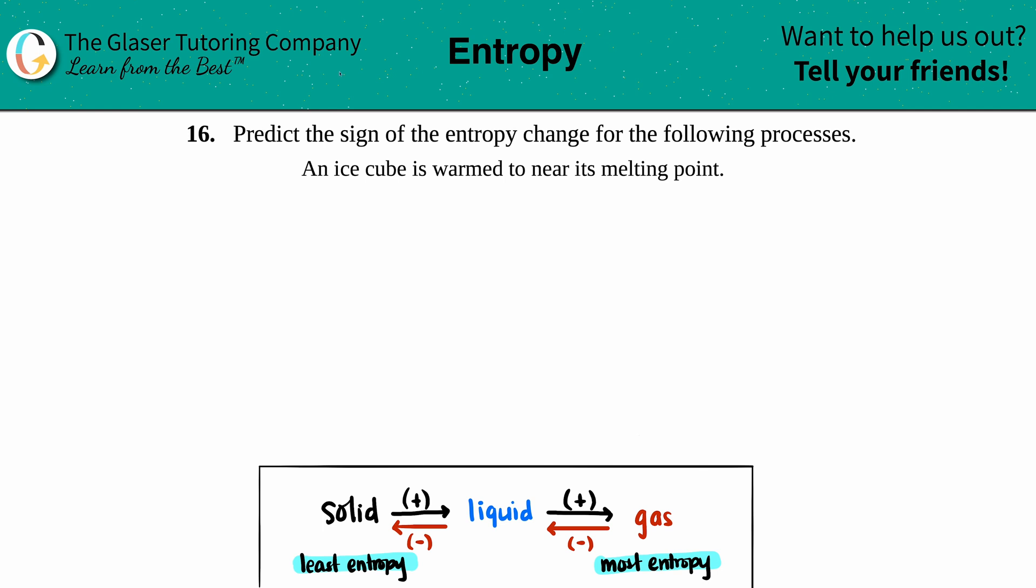Number 16: Predict the sign of the entropy change for the following processes. And then we have this example right here - an ice cube is warmed to near its melting point. Okay, so when we now want to predict the sign of the entropy change...